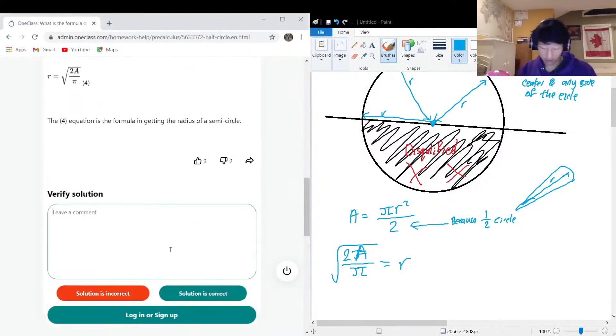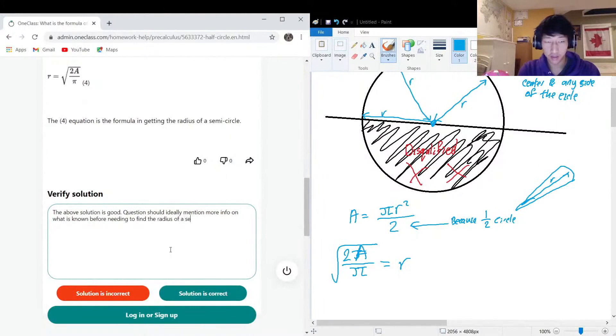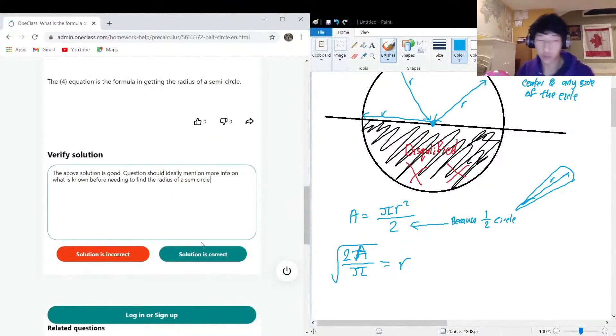So yeah, solution is correct. Good question. Ideally, you need more information on how the semicircle is known before finding the radius. Okay, awesome.